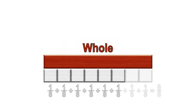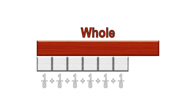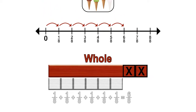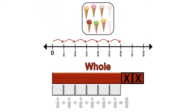In the next example, we will only consider part of the whole, rather than the complete whole as we have been. Again, the brown rod represents the whole, but we will only consider six-eighths of the whole, represented by six white rods, each one-eighth of the whole. Similarly, six-eighths is shown as six jumps on the number line, or six out of eight of the set of ice cream cones.